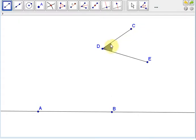Here we're given an angle CDE. We'd like to construct an angle equal to that at the point A.